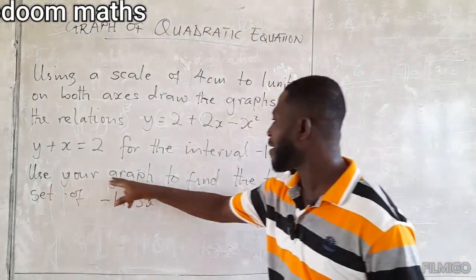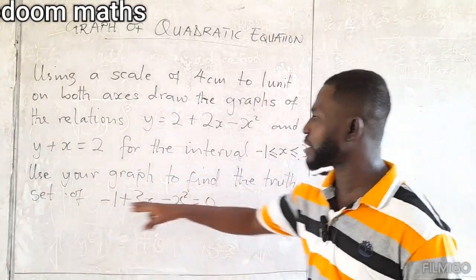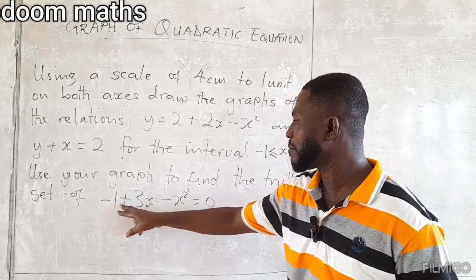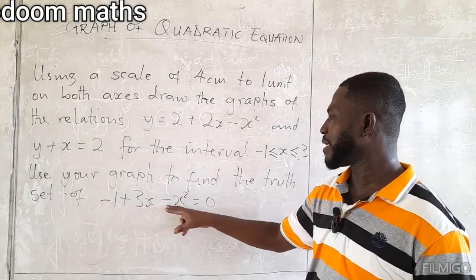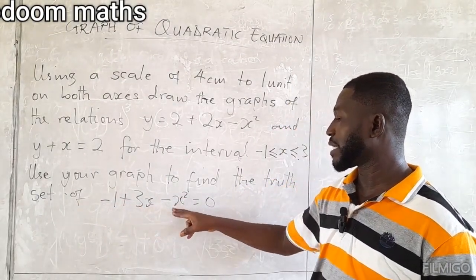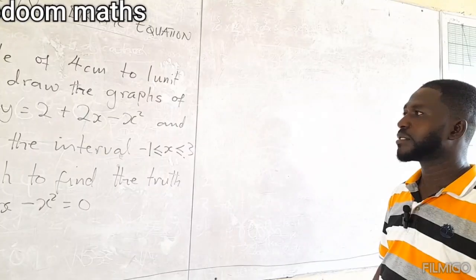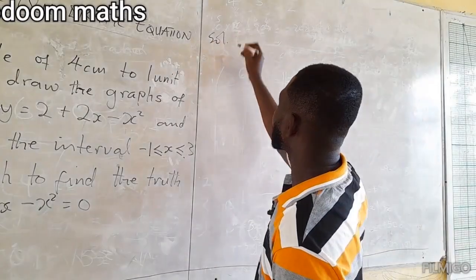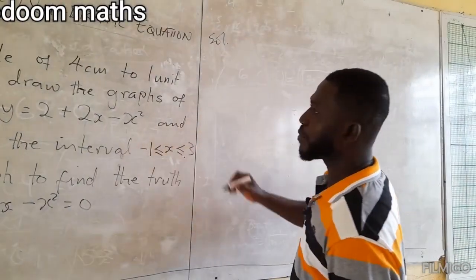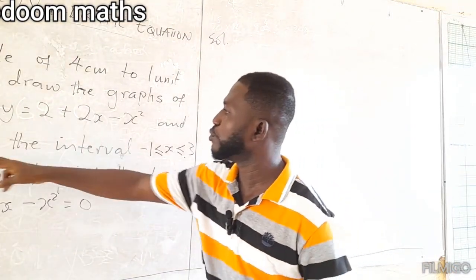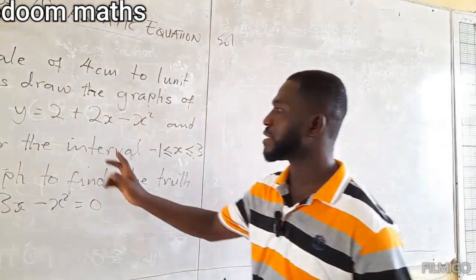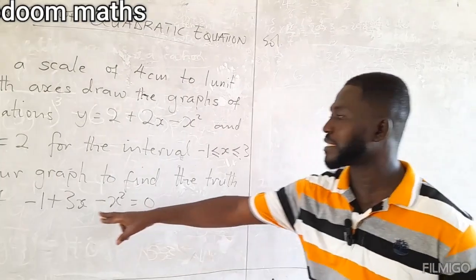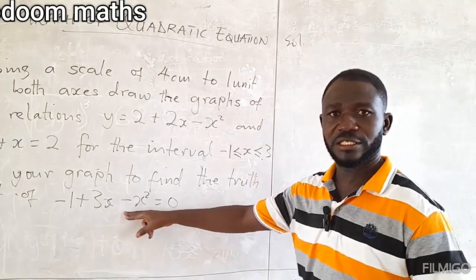Use your graph to find the truth sets of negative 1 plus 3x minus x squared equals 0. So let's solve this. We need to get the table for the two relations, then draw the graph and answer the question.